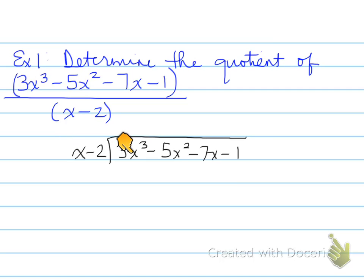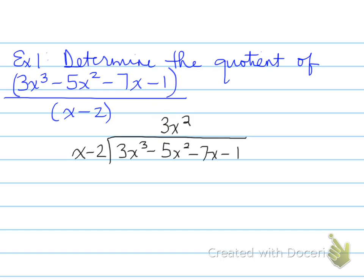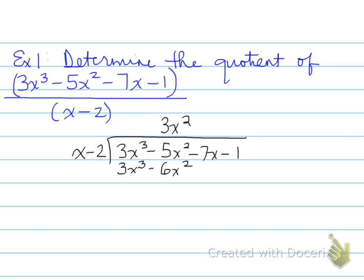x times what gives us 3x cubed? That's going to be 3x squared. Note where I put that — line up the degrees and common terms. When I take 3x squared and multiply by x, that gives me 3x cubed. Then I take negative 2 and multiply by 3x squared, giving us negative 6x squared. We subtract: 3 minus 3 gives us 0, and negative 5 minus negative 6 gives us positive x squared.